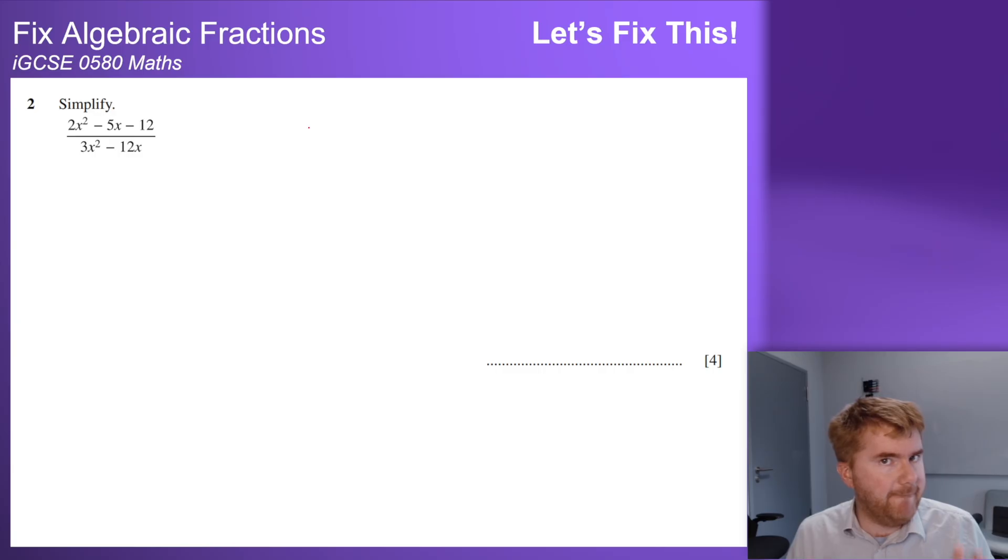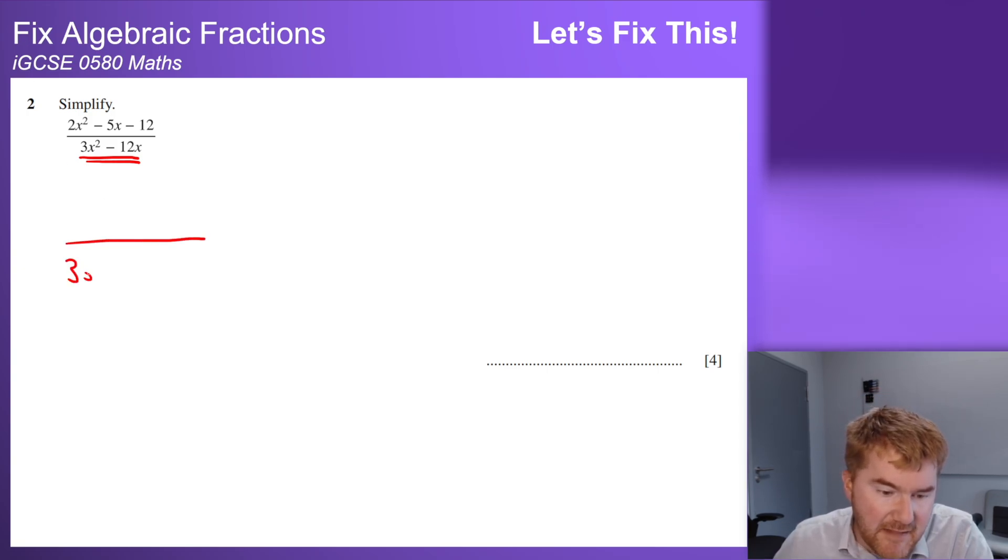Now where it gets a bit trickier is something like this. It's the big four-marker towards the end of the paper, but we can use the same idea. Notice the bottom part is an easy factorization - we have two terms. So what goes into both 3x squared and 12x? Well, 3x goes into both. And then we work backwards: what do you multiply 3x by to get 3x squared? Just x. What do you multiply 3x by to get minus 12x? Minus 4. So we've managed to factorize that and put it into brackets.